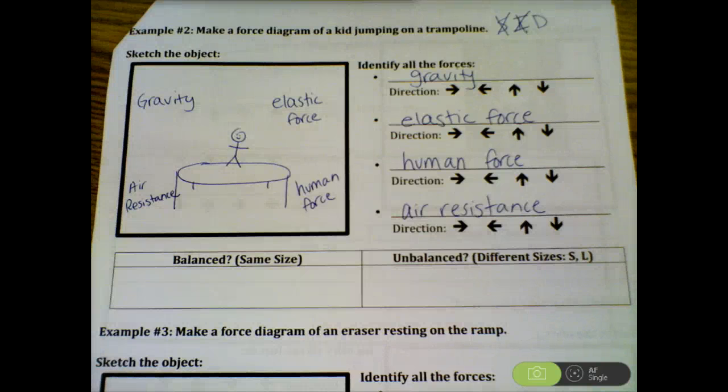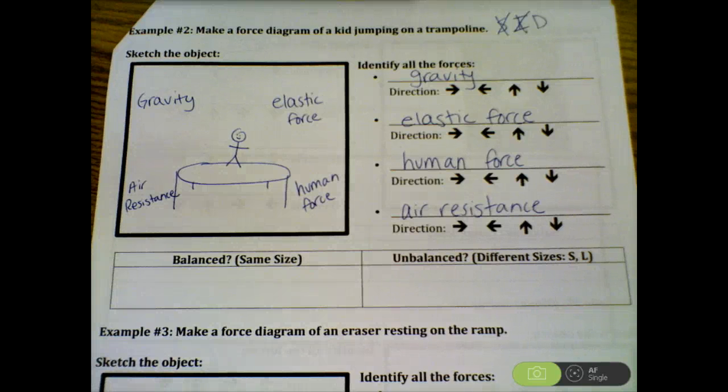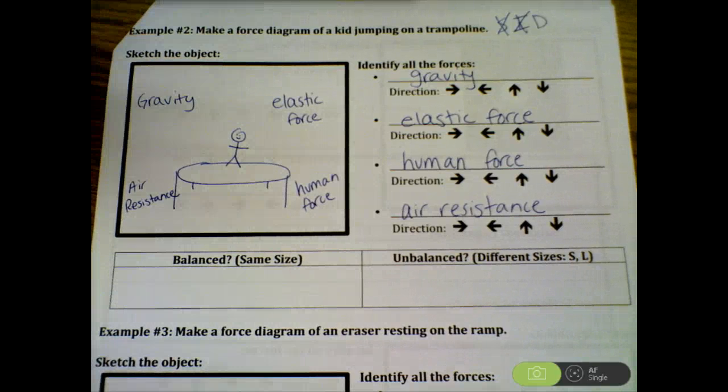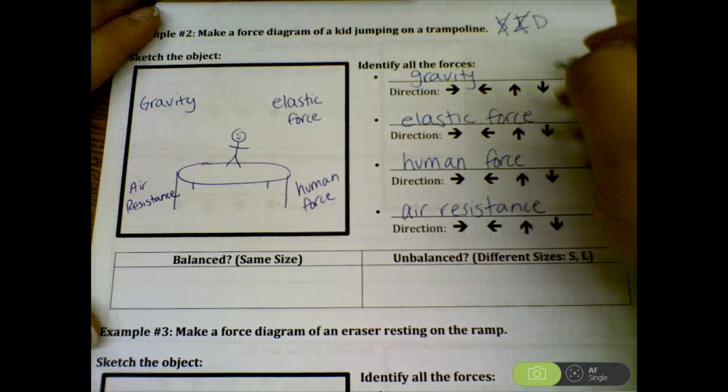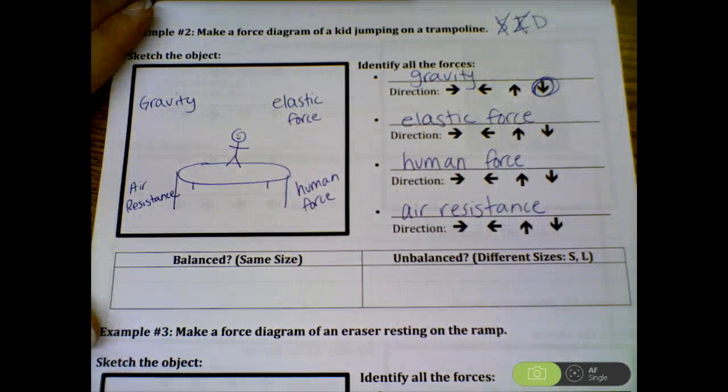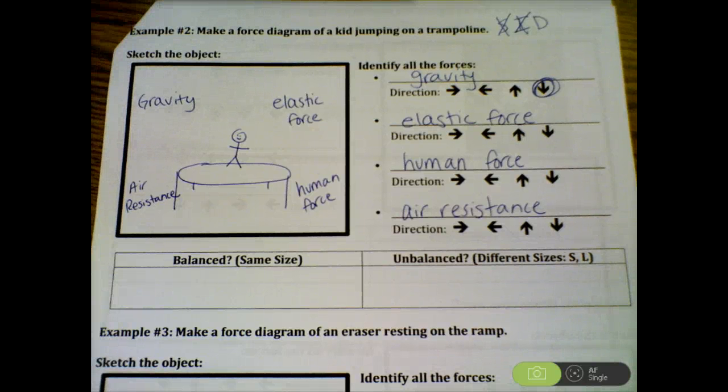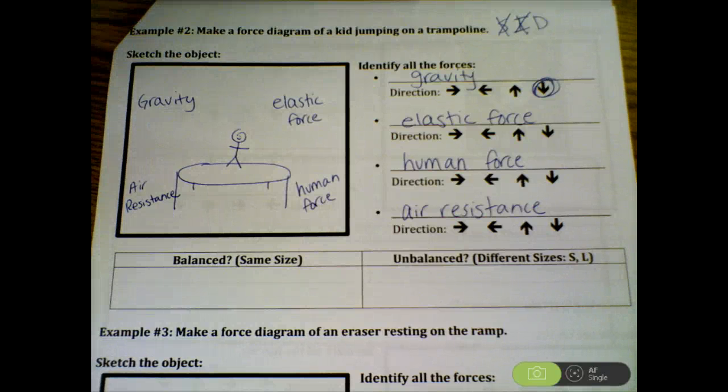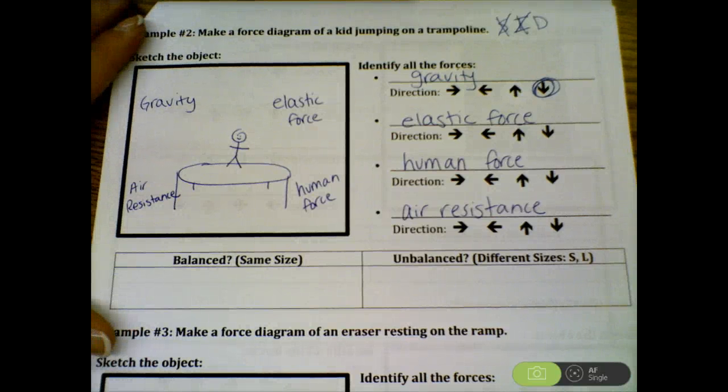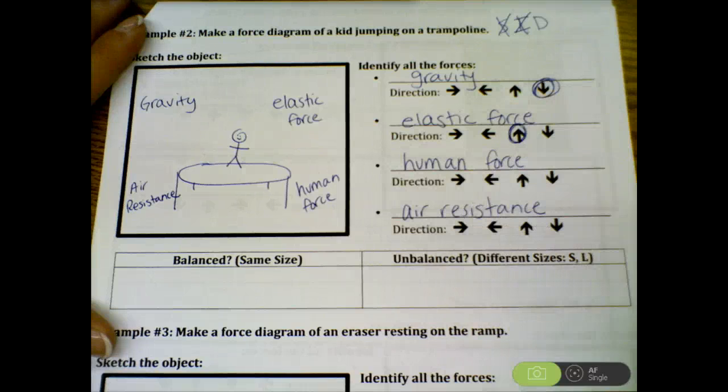The last thing we need to do is drawing the arrows. And that's the trickiest part because we need to make sure that they're the correct direction and the correct size. Looking at the direction, we know that gravity is always going downward. When it comes to elastic, you want to think about which way that force is helping the object go. In this case, the object is the kid. And elastic force is helping the kid bounce back up. So we're going to go ahead and say up.